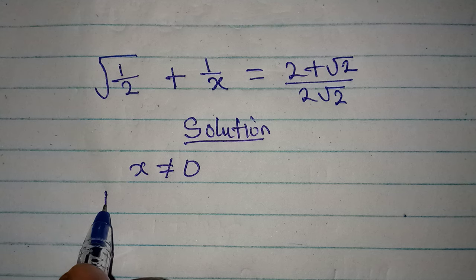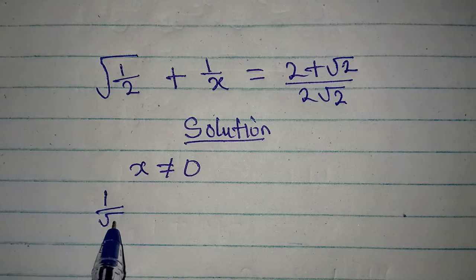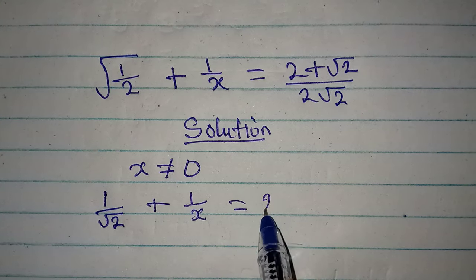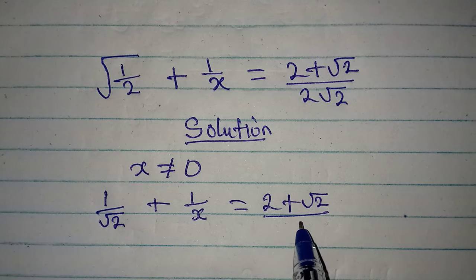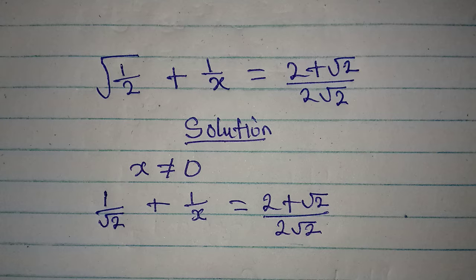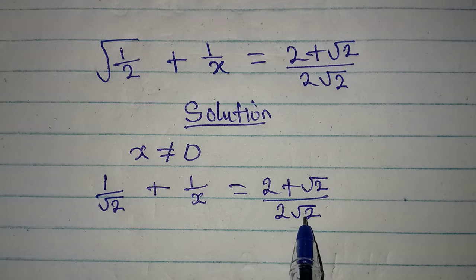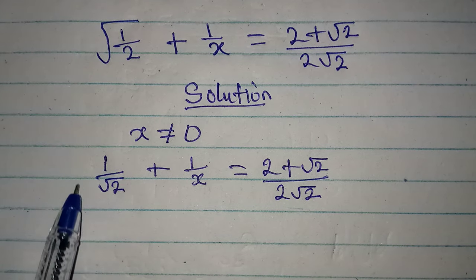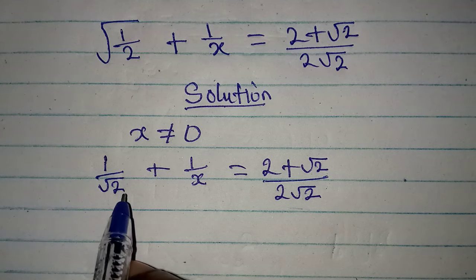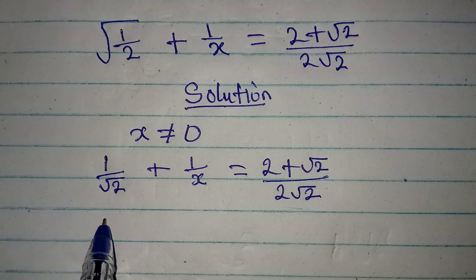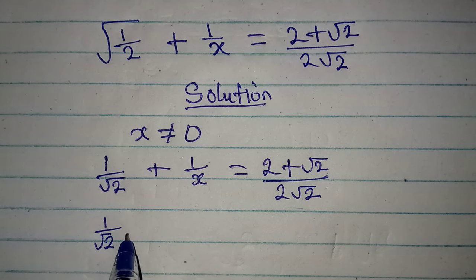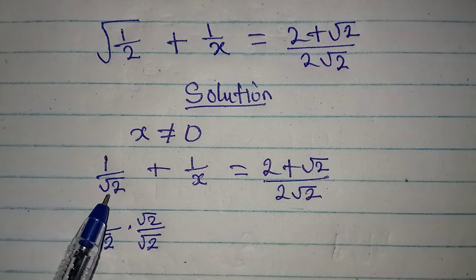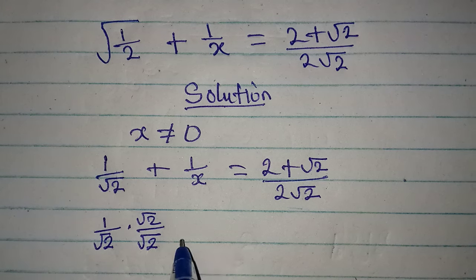The square root of 1 is 1, and square root of 2 comes under here, then plus 1 over x equals 2 plus square root of 2 over 2 root 2. Mind you, these two cannot cancel. Now the next thing we'll do is rationalize this. Remember to rationalize the whole of this. So I'll do 1 over square root of 2, multiplied by square root of 2 over square root of 2.